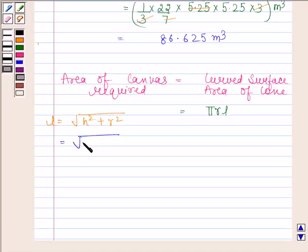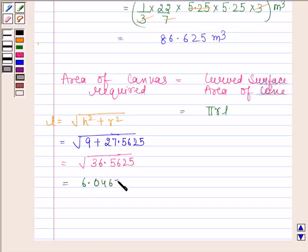we get square root of 9 plus 27.5625. Now this is equal to 36.5625. Now this is equal to 36.5625 under the root and this is equal to 6.0467 approximately.